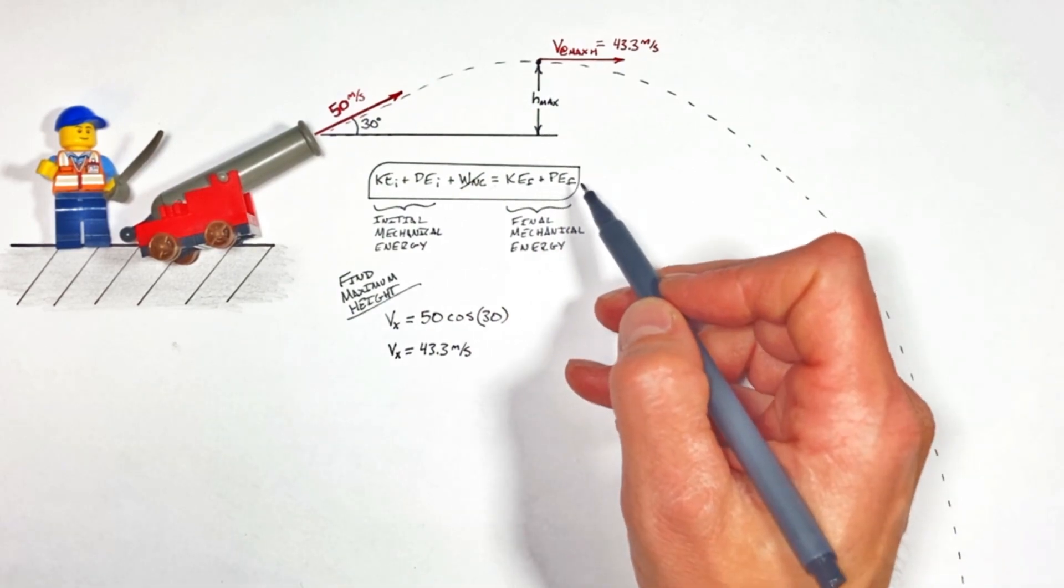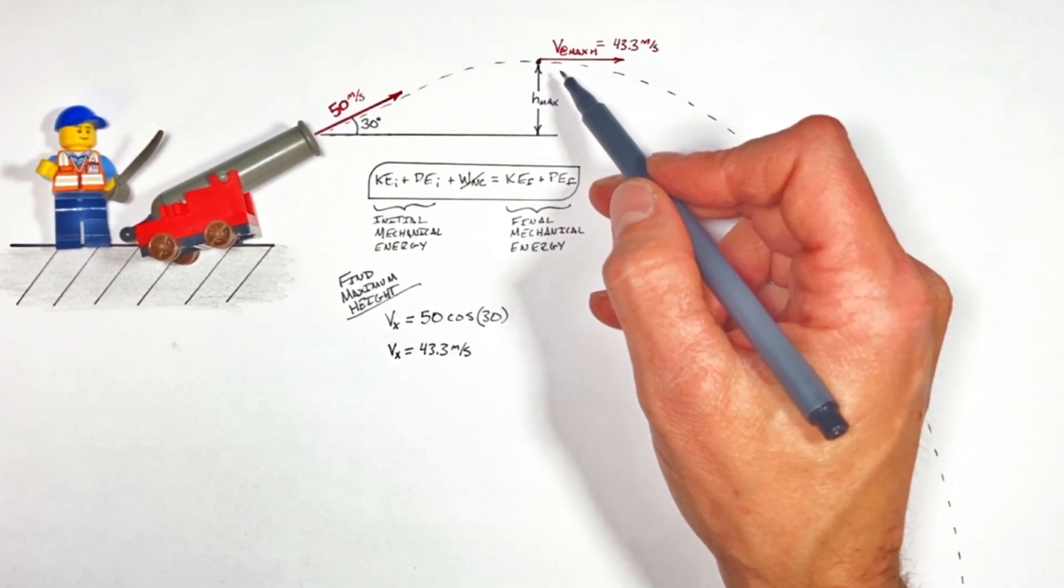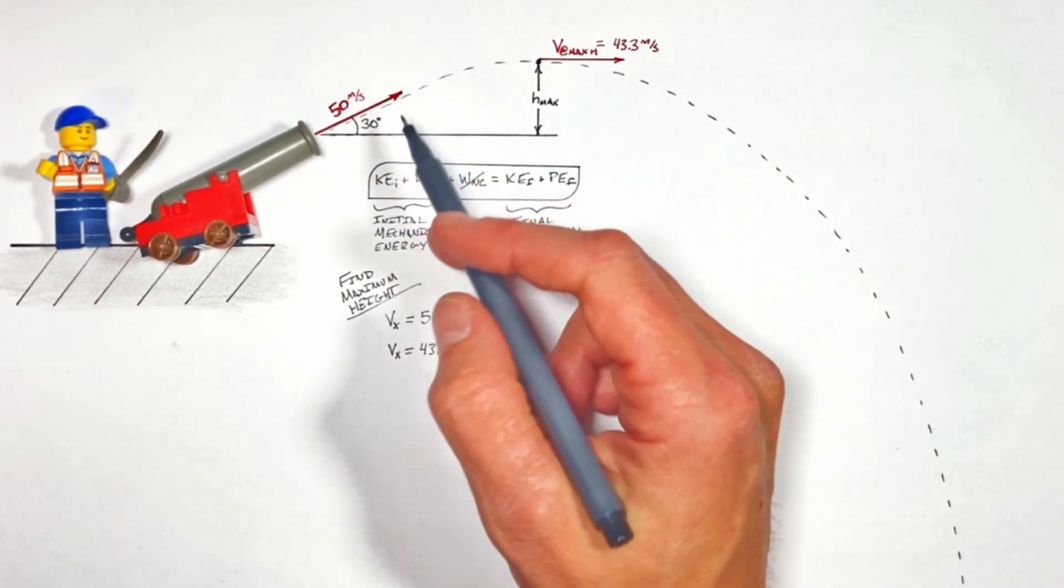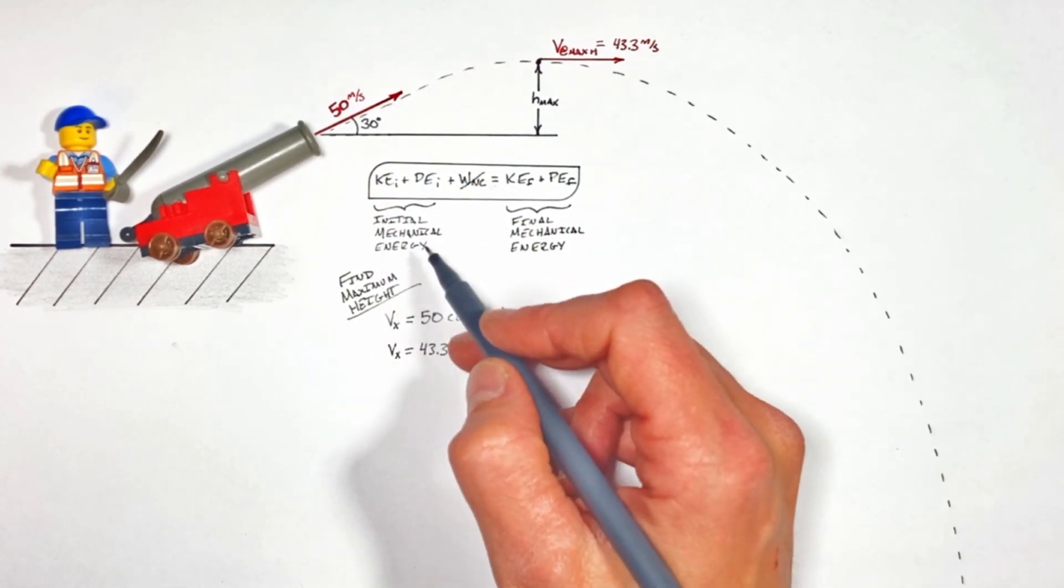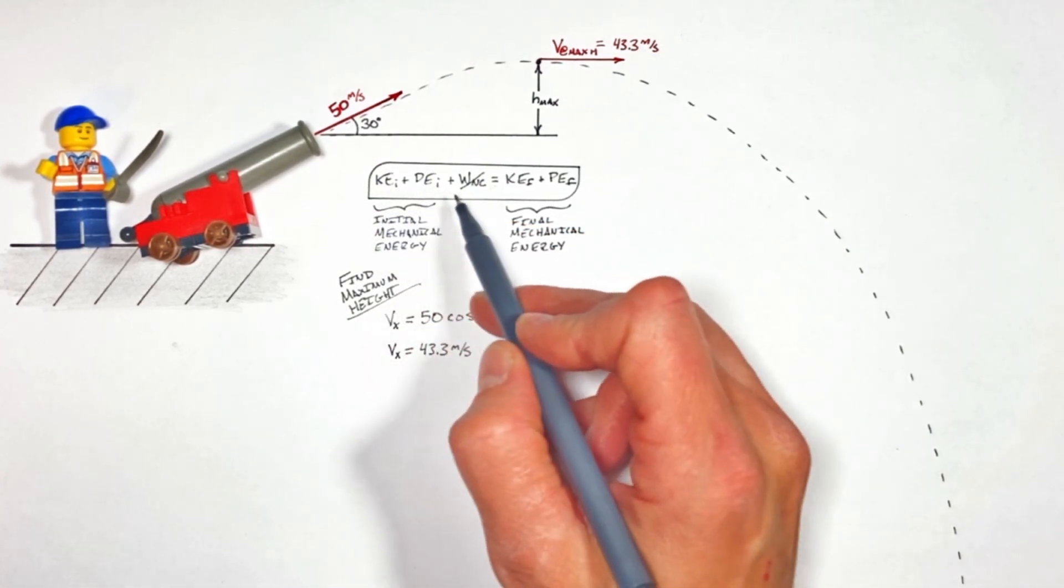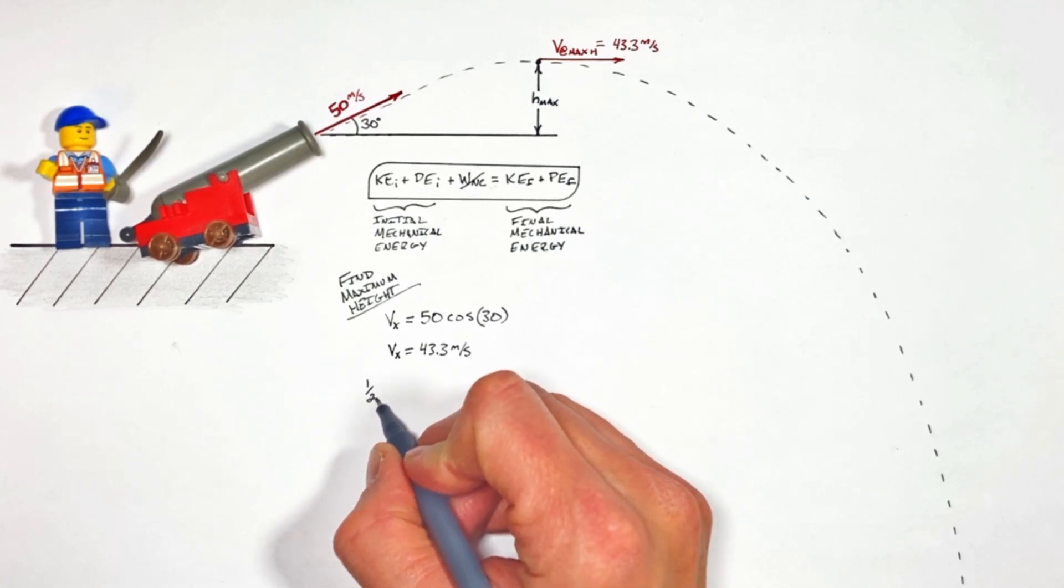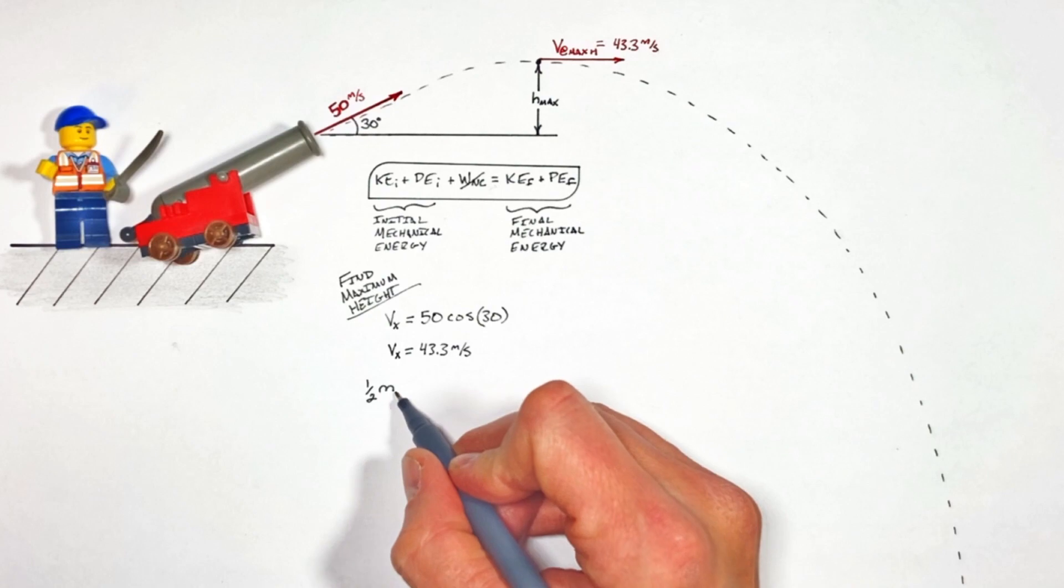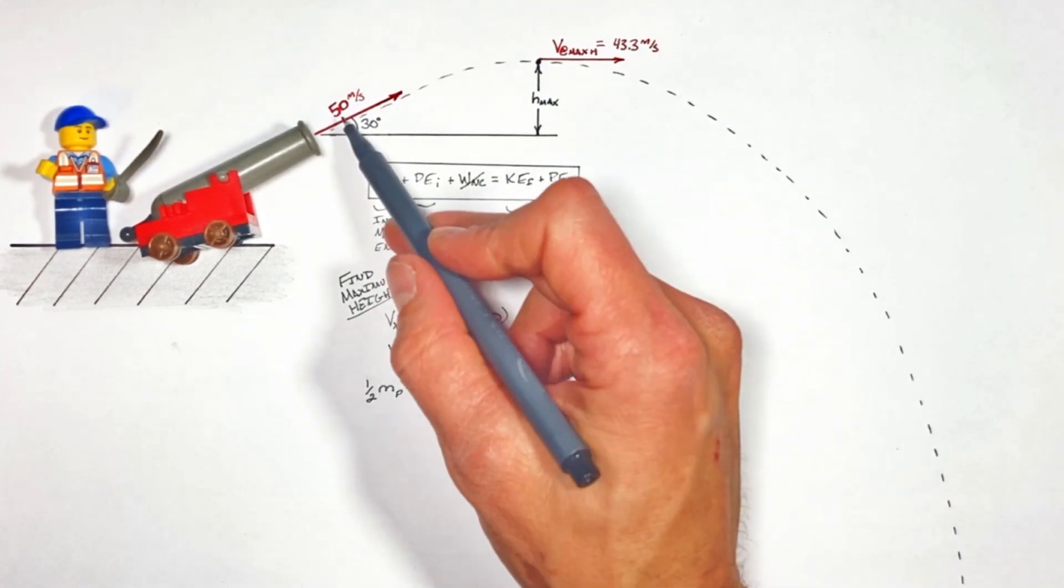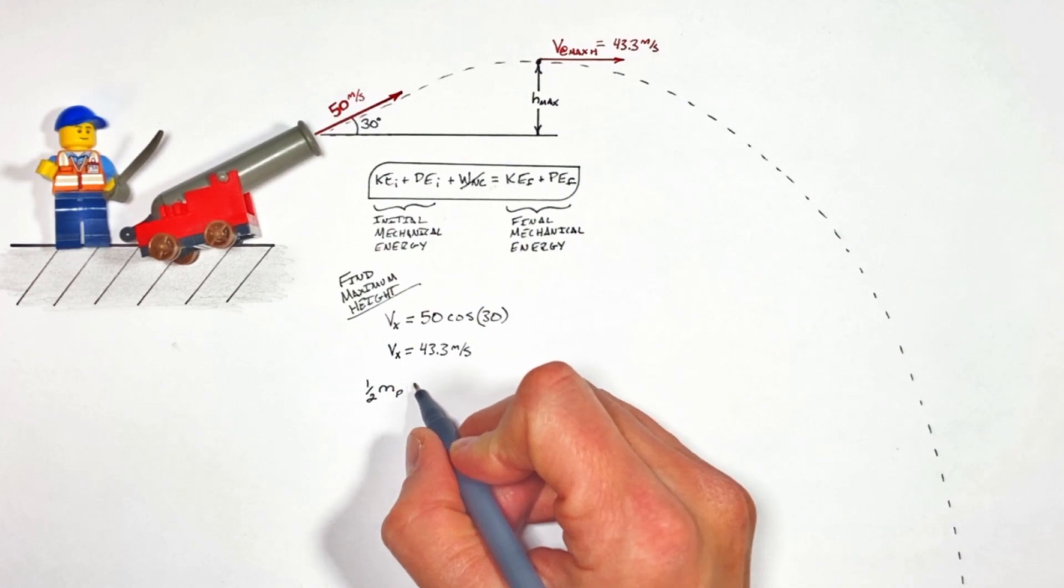Now that we know this velocity, we can turn to the conservation of energy to solve for this maximum height. The projectile, when it comes out of the cannon, has some initial mechanical energy given by its kinetic plus potential energies. The kinetic energy is going to be one-half times the projectile's mass (I'm going to call it mp) multiplied by its velocity, which is initially 50.